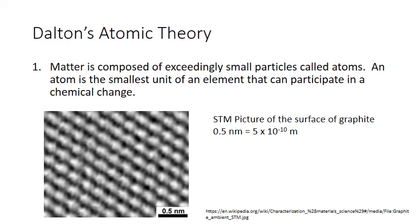Here's another STM picture, this time of the carbon atoms found in graphite, which is the same substance you'll find in your pencil lead. And this picture gives you an idea of the scale of the atoms. The black line in the corner represents 0.5 nanometers.